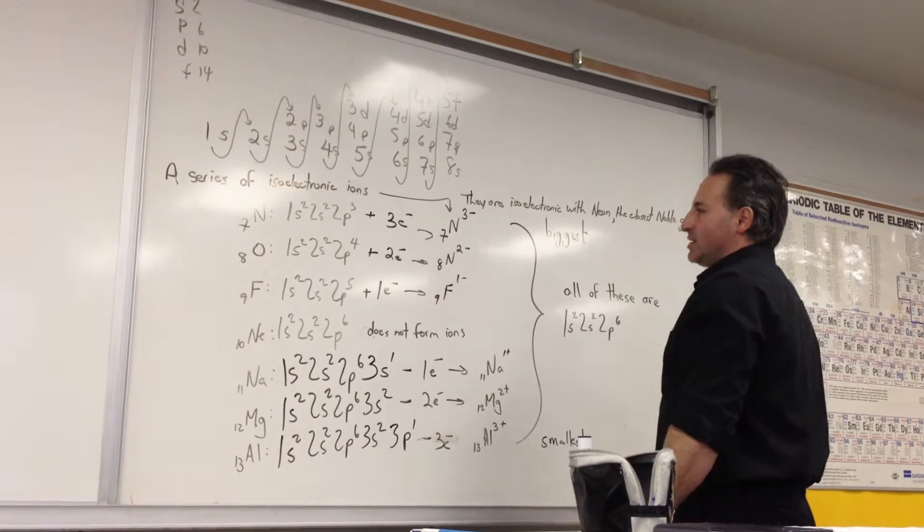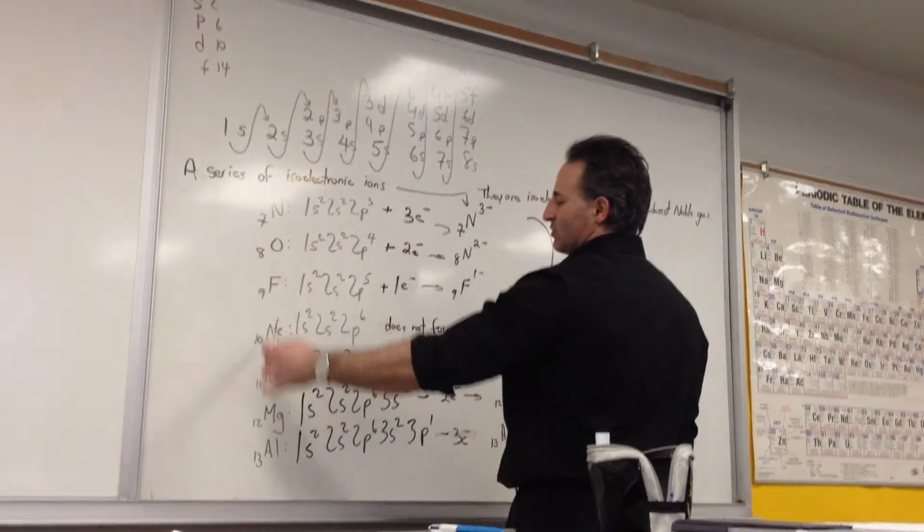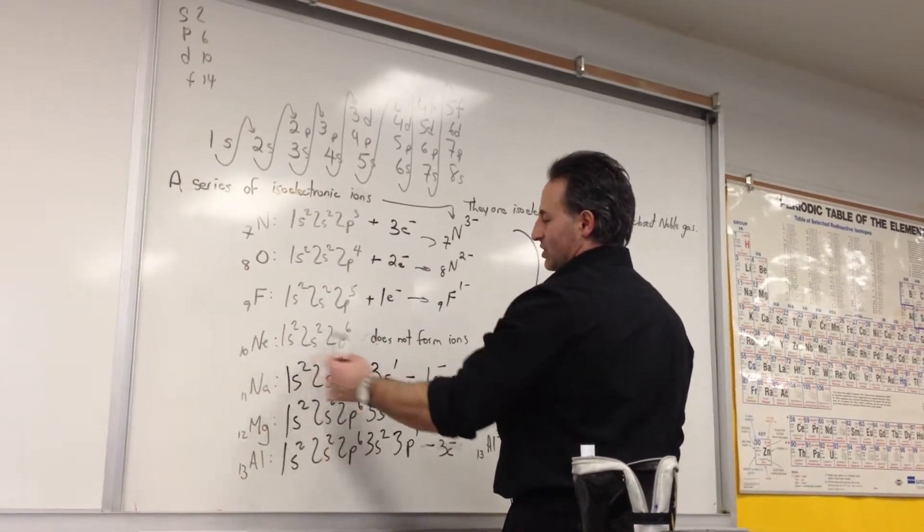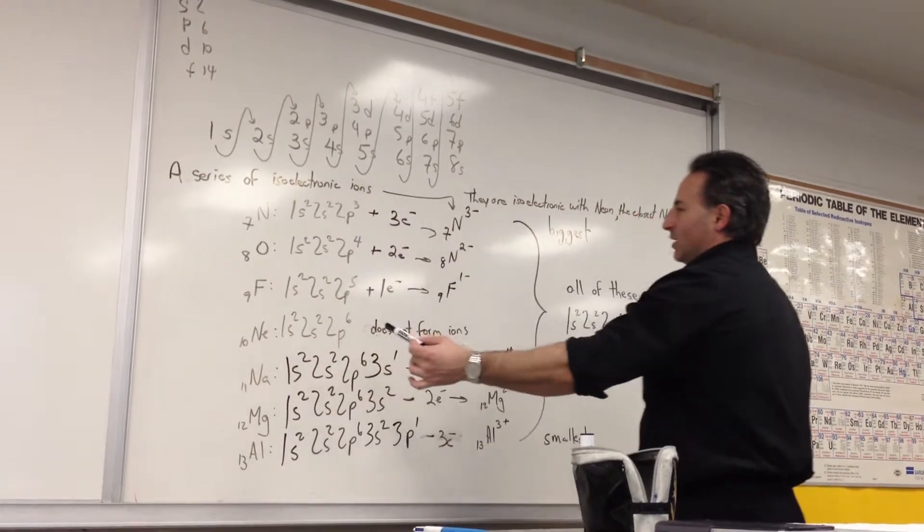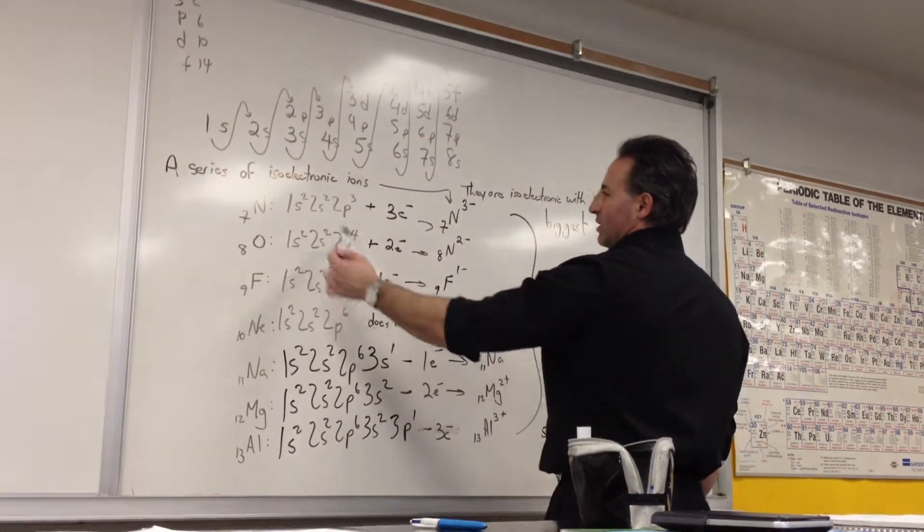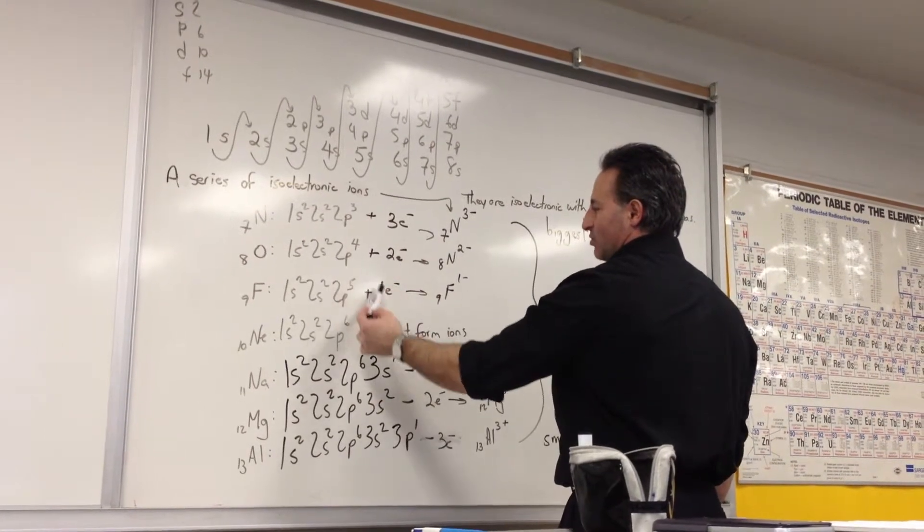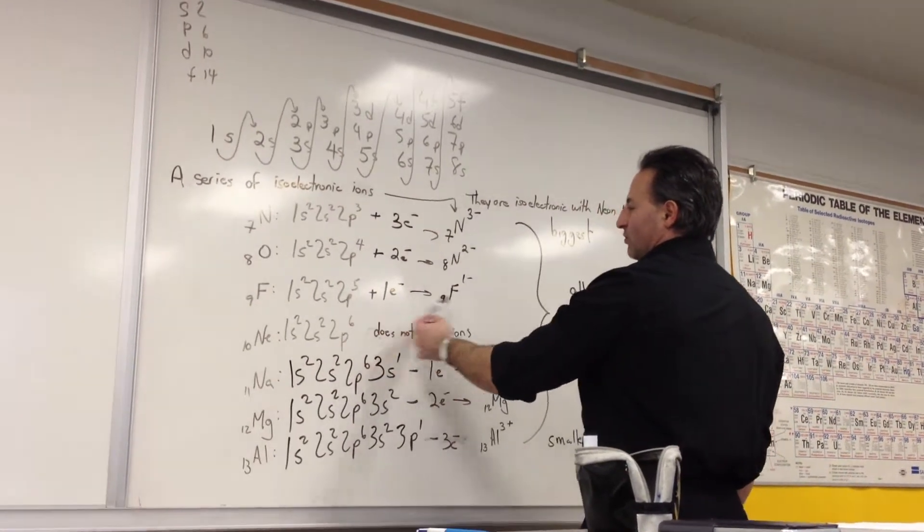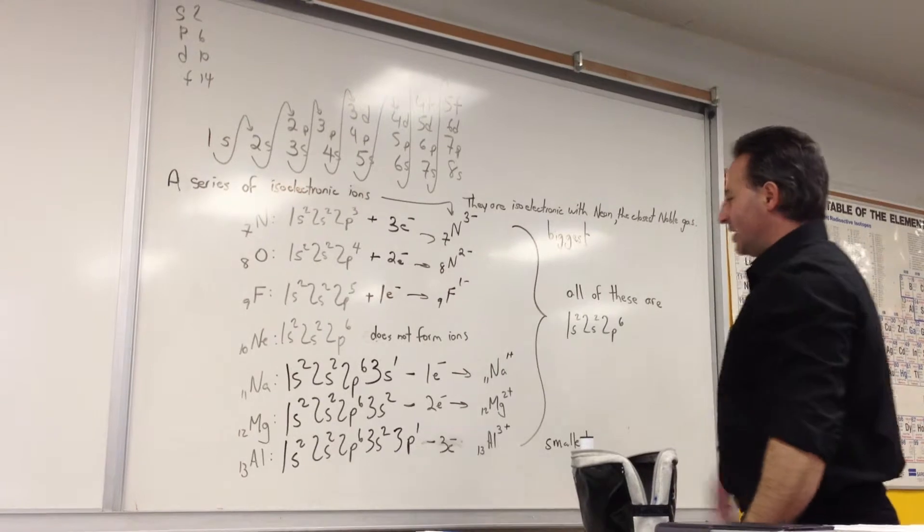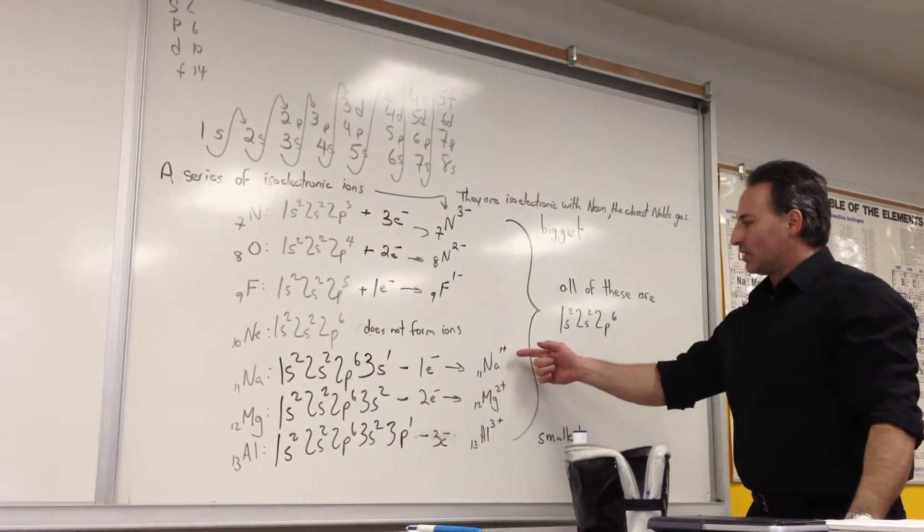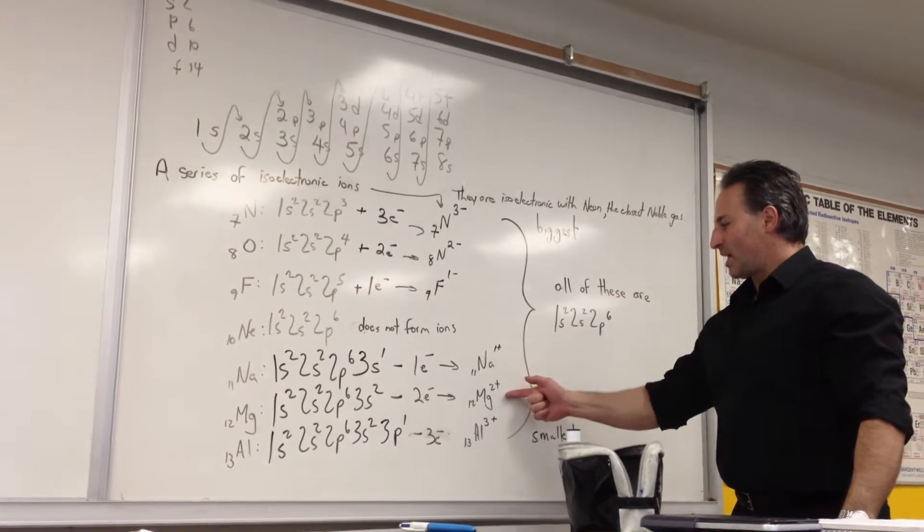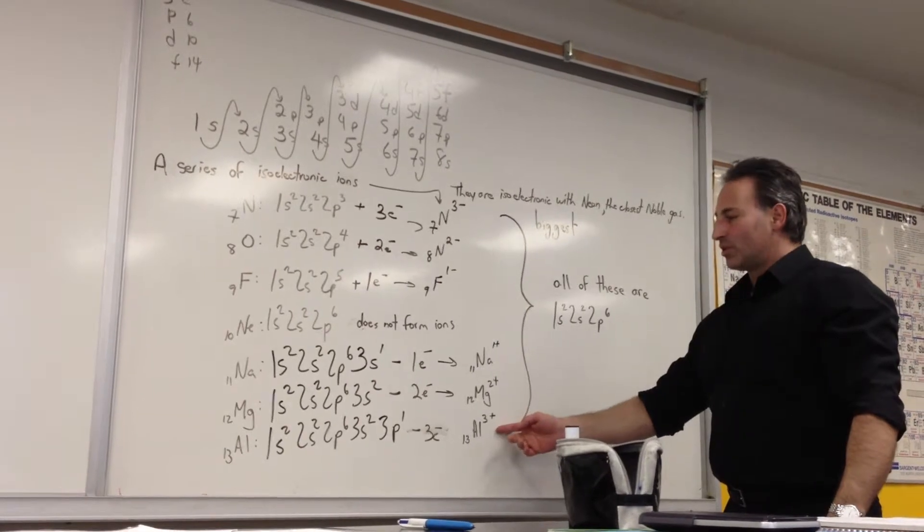What's interesting to notice is how when each of these elements form ions, and of course neon doesn't form an ion because it's already stable, nitrogen will form nitride. Oxygen will form oxide with a negative two charge. Fluorine will form fluoride with a negative one charge. All the metallic elements tend to lose electrons. So sodium loses one. Magnesium will lose two. Aluminum will lose three.